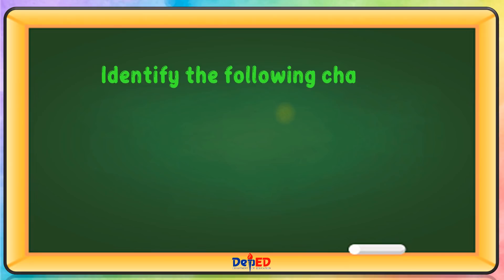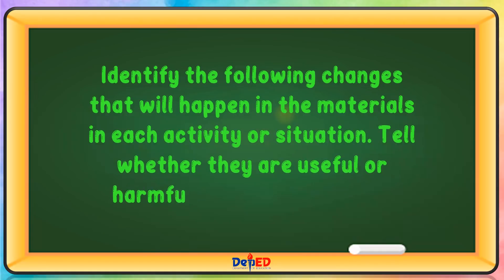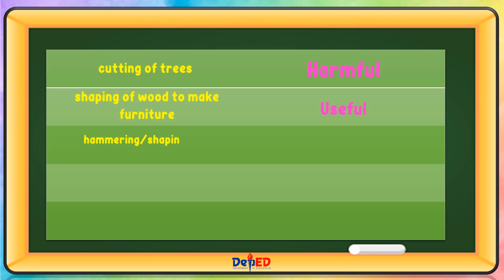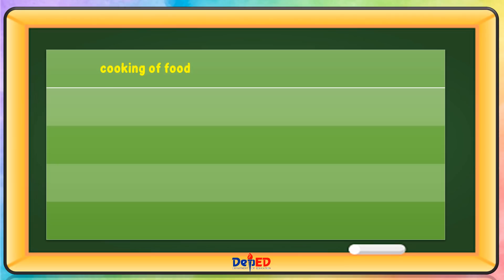Identify the following changes that will happen in the materials in each activity or situation — tell whether they are useful or harmful in the environment. Cutting of trees — harmful. Shaping of wood to make furniture — useful. Hammering or shaping iron to make a tool — useful. Burning of old tires — harmful. Shredding paper for paper mache — useful. Cooking of food — useful.